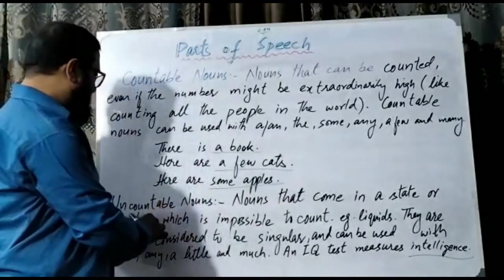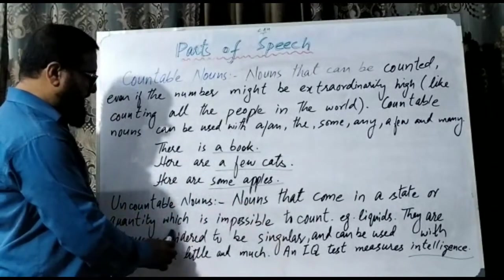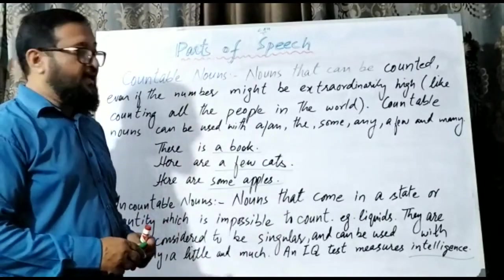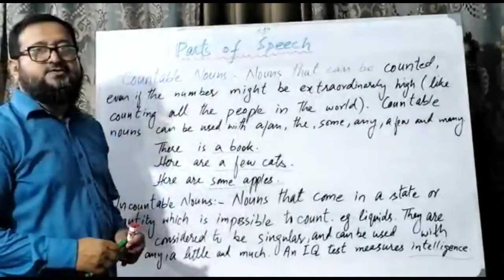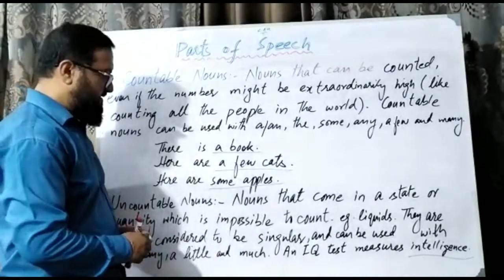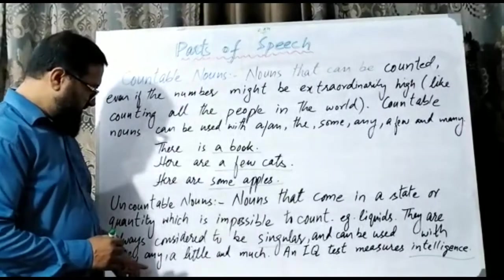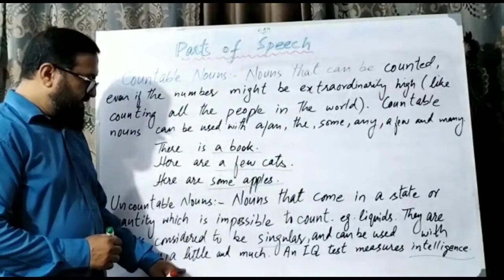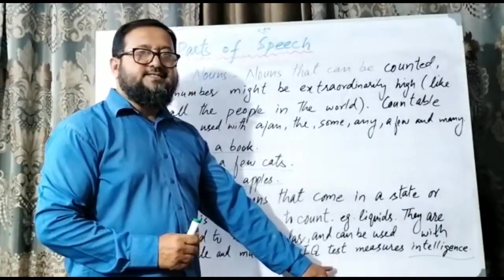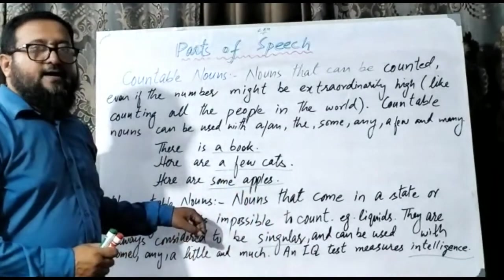Now let us discuss uncountable nouns. Uncountable nouns are nouns that come in a state or quantity that is impossible to count — like liquids: milk, oil, water. We cannot count them. They are always considered to be singular and can be used with: some, any, a little, and much. For example, 'An IQ test measures intelligence' — intelligence cannot be counted. These are uncountable nouns.